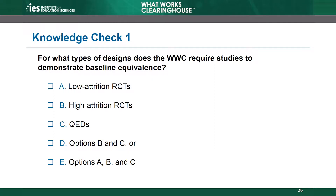Now let's check 1. For what types of designs does the WWC require studies to demonstrate baseline equivalence? A. Low attrition RCTs. B. High attrition RCTs. C. QEDs. D. Options B and C. Or E. Options A, B, and C.